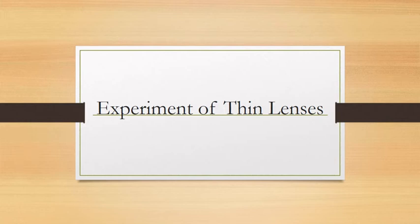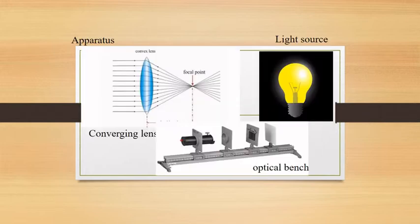Experiment of Thin Lenses. The objective of this experiment is to measure the focal lengths of converging lenses by the displacement method. The apparatus of this experiment includes converging lenses, optical bench, screen, and light source.